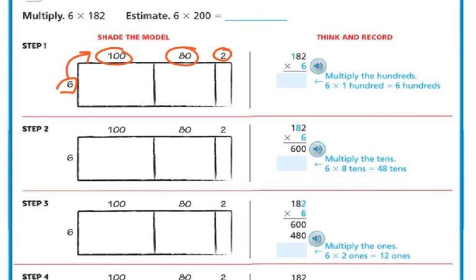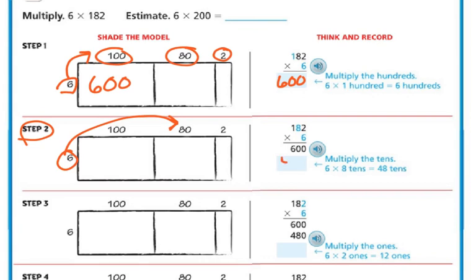So 6 times 100: 6 times 1 is 6, I have my two zeros, so step 1 is 600. Now step 2, they want me to do 6 times 80. Using my distributive property, 6 times 8 is 48, and then I have my zero, so 480. Step 3, now I'm multiplying 6 times 2 — that's my distributive property — and 6 times 2 is 12, so I'm going to put my 12 there.